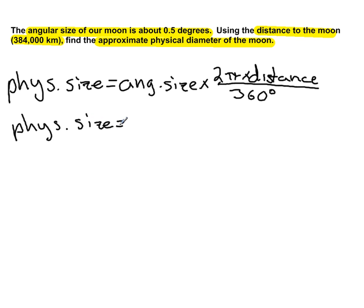The angular size was given in the problem right here: 0.5 degrees. So 0.5 degrees times that 2π is a constant, then the distance is given here: 384,000 kilometers.